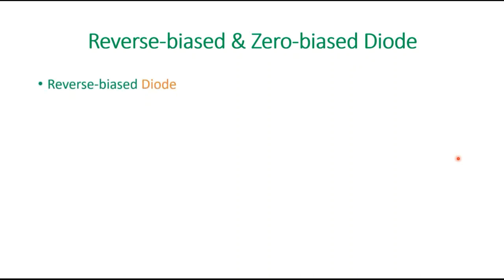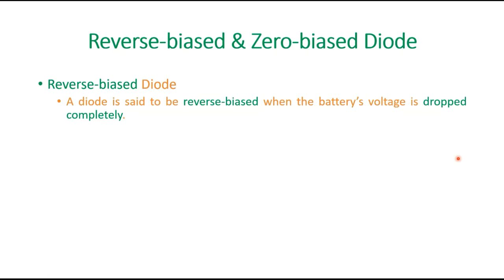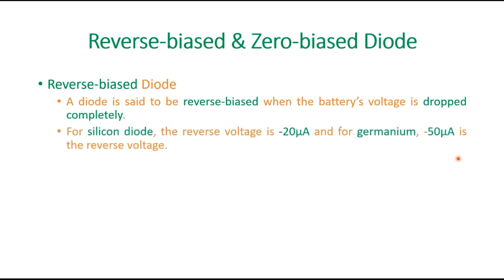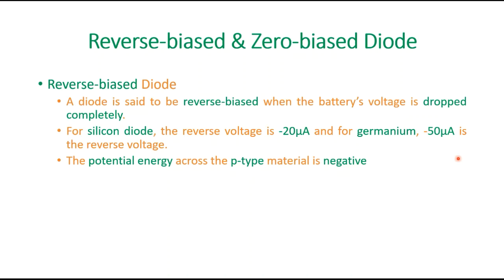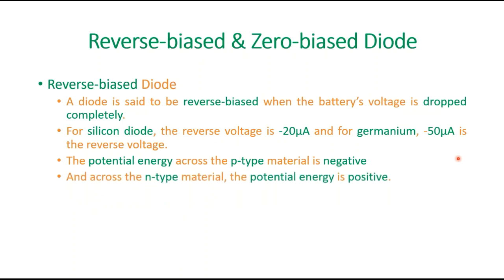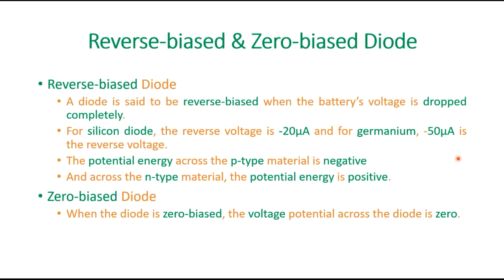Coming to reverse biased diode: it is said to be reverse biased when the battery's voltage is dropped completely. For the silicon diode the reverse current is minus 20 microamperes, and similarly for germanium it is minus 50 microamperes. The potential energy for p-type material is negative, whereas across the n-type material the potential energy is positive. For zero biased diode, the voltage potential across the diode is zero.